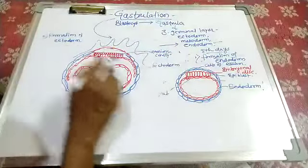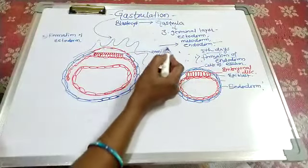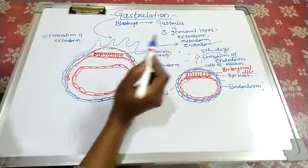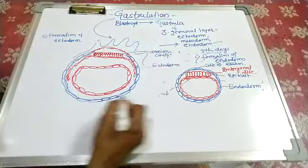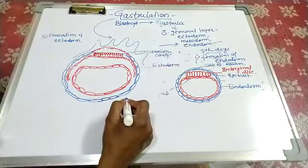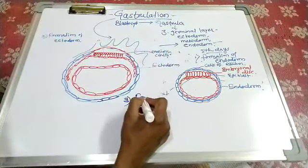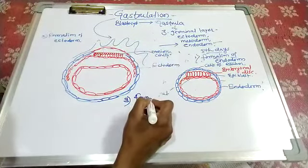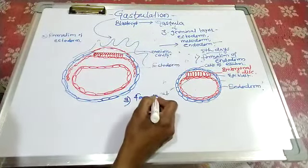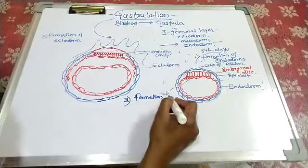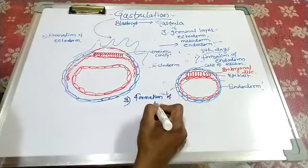After the formation of ectoderm and the amniotic cavity, there is a third process — that is the formation of the primitive streak.